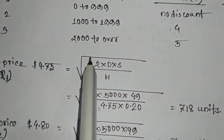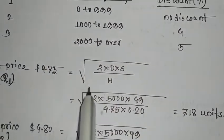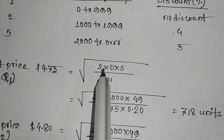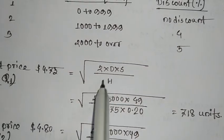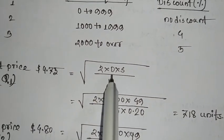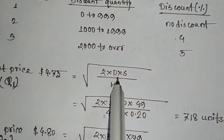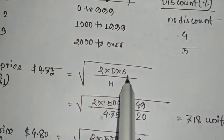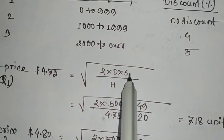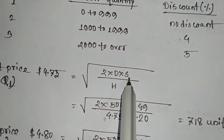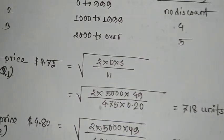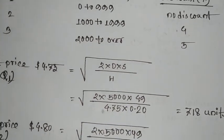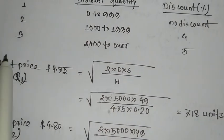The economic order quantity formula is the square root of 2DS divided by H, where D is the annual demand, S is the ordering or setup cost, and H is the holding or carrying cost.